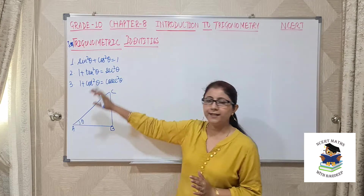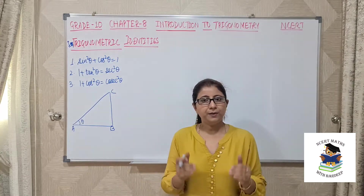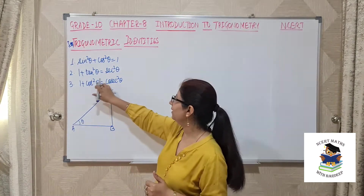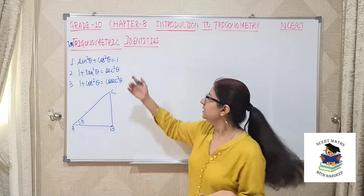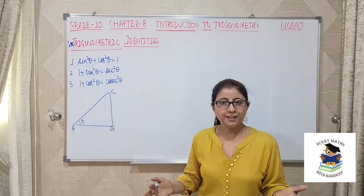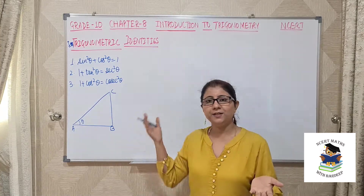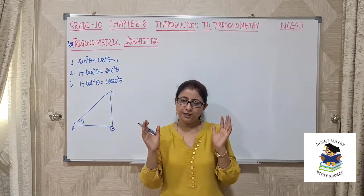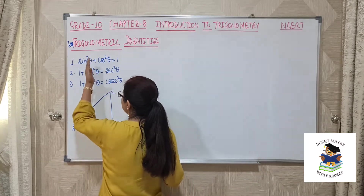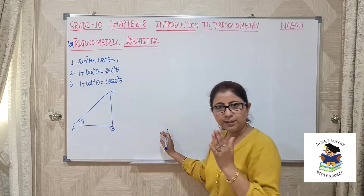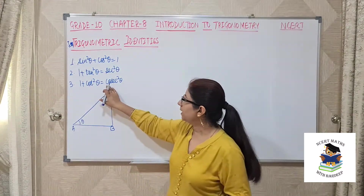You should memorize these 3 identities. For the first one, sin²θ + cos²θ = 1, remember: if it's 'c' (cosine) on the left, there's no 'c' on the right — just 1. One identity involves cot and cosecant, another involves tan and secant. Students often make the mistake of not knowing which side tan and secant go on. Remember: 1 + tan²θ = sec²θ, and 1 + cot²θ = cosec²θ. The 'c' terms (cot and cosec) come together.